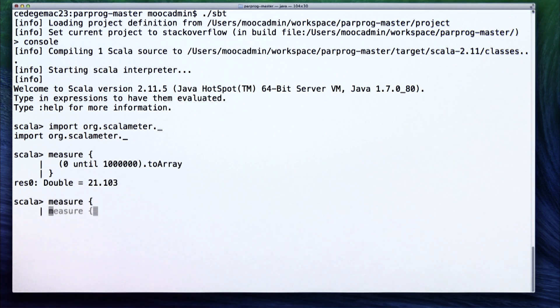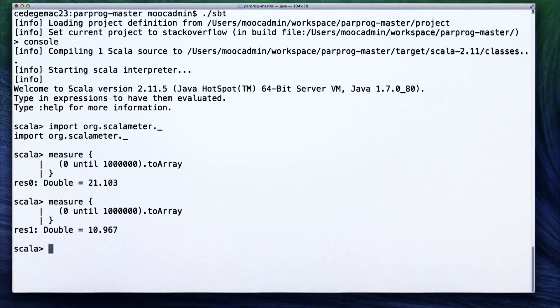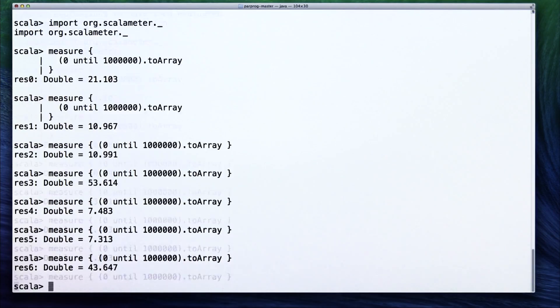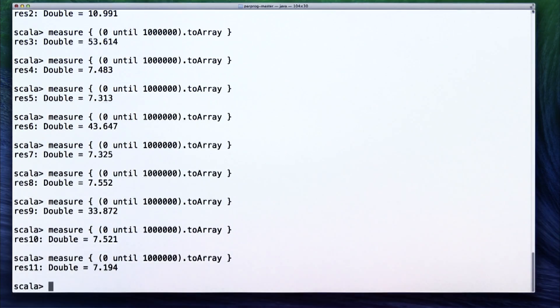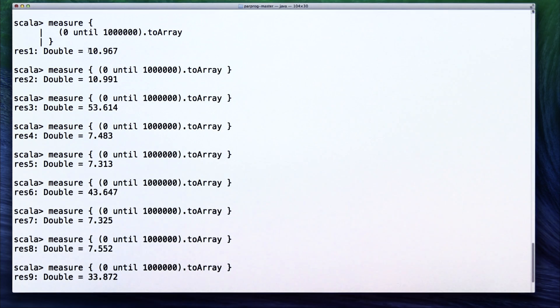The result we get is 21 milliseconds. However, we run the measurement again. Oddly enough, the running time is now 10 milliseconds. This is quite a big deviation from the initial measurement. Let's rerun the snippet several more times. The numbers we get are quite interesting. First, the running time was 10 milliseconds consecutively. Then for some strange reason the running time grew to 53 milliseconds. This is quite unusual. What's even more interesting is that after that the running time is no longer 10 milliseconds, but 7.5.